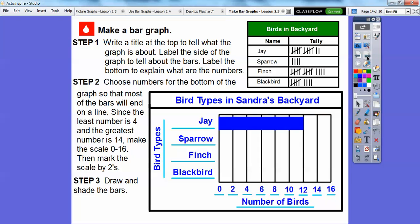Sparrows—there weren't many sparrows in Sandra's backyard, so we're only going to go out to 4. We'll shade sparrows right out to 4.